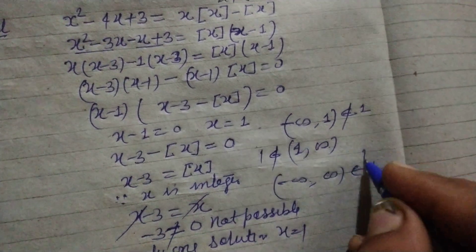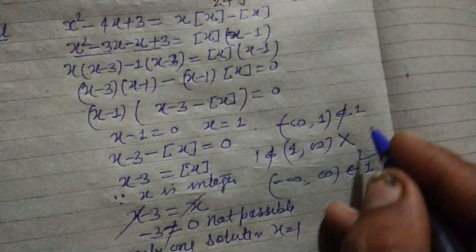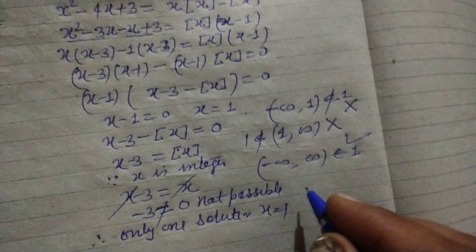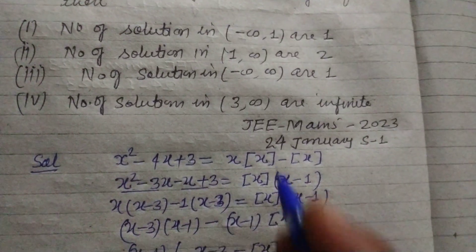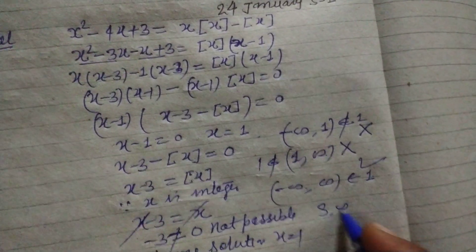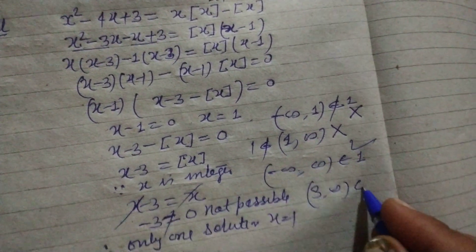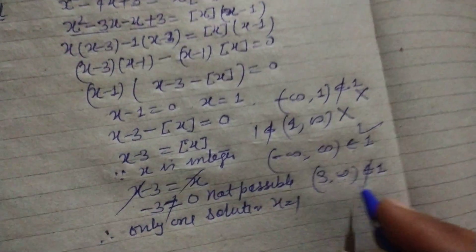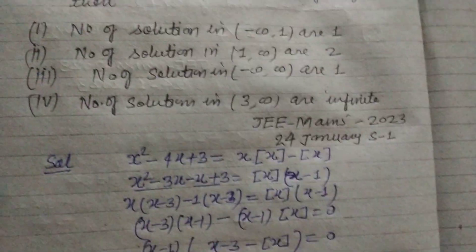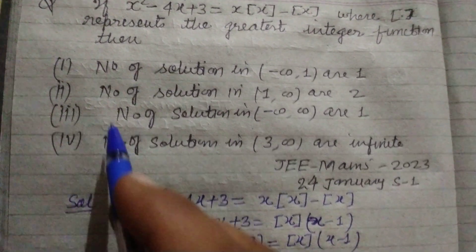One belongs to this, so this is right. And the last is (3, ∞), which doesn't contain 1. Therefore this is also not correct. So the correct option is third.